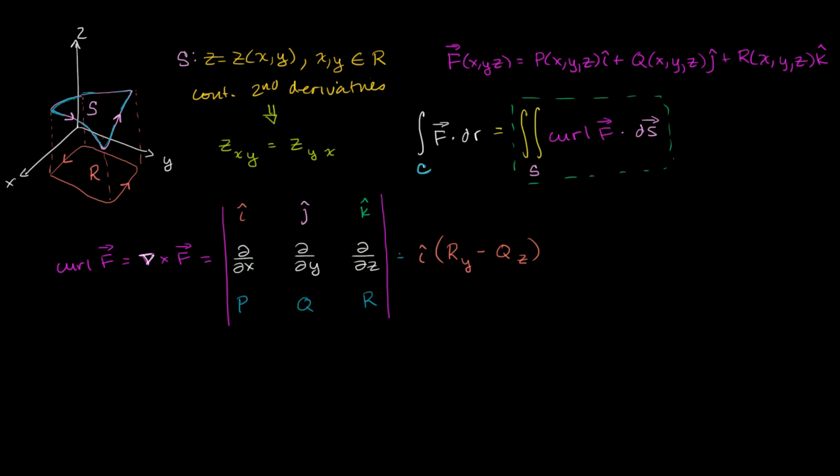And then, checkerboard pattern, minus j, let me make that hat a little bit better, minus j, and then times the partial of r with respect to x, partial of r with respect to x, minus the partial of p with respect to z.